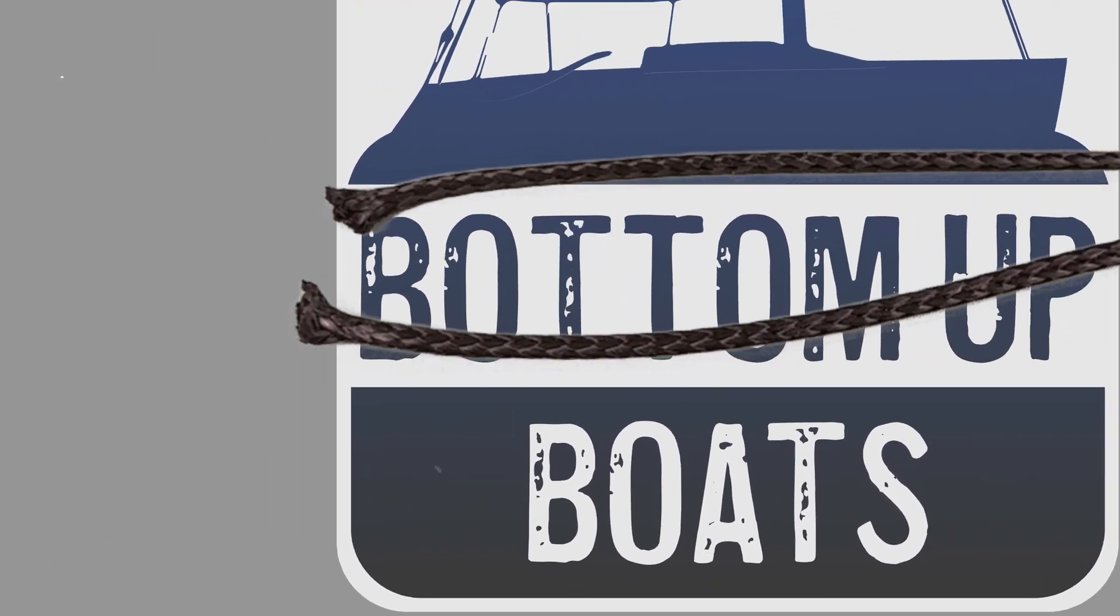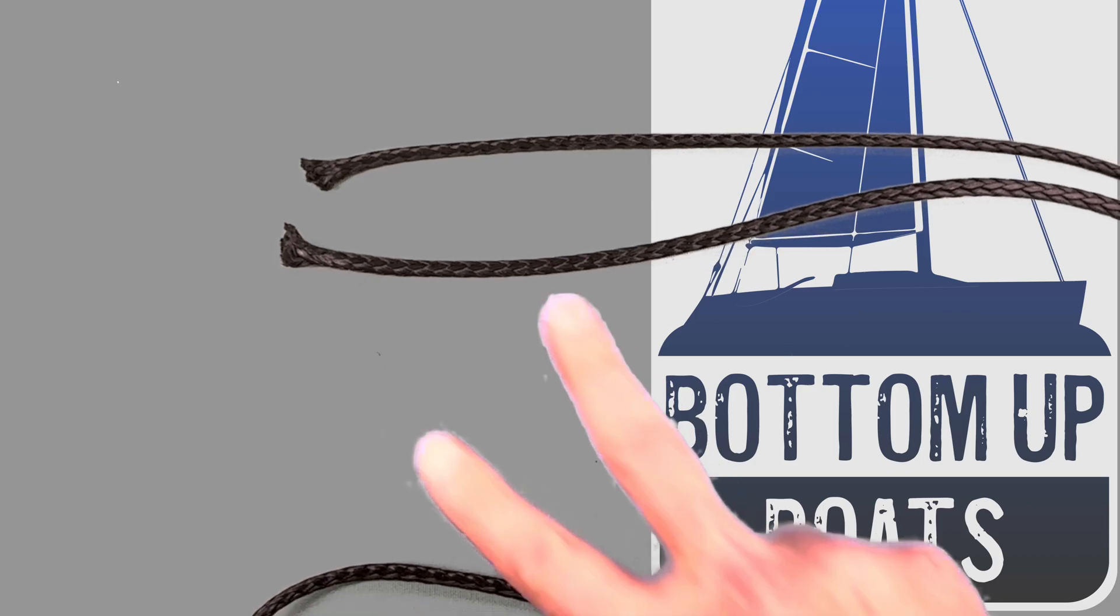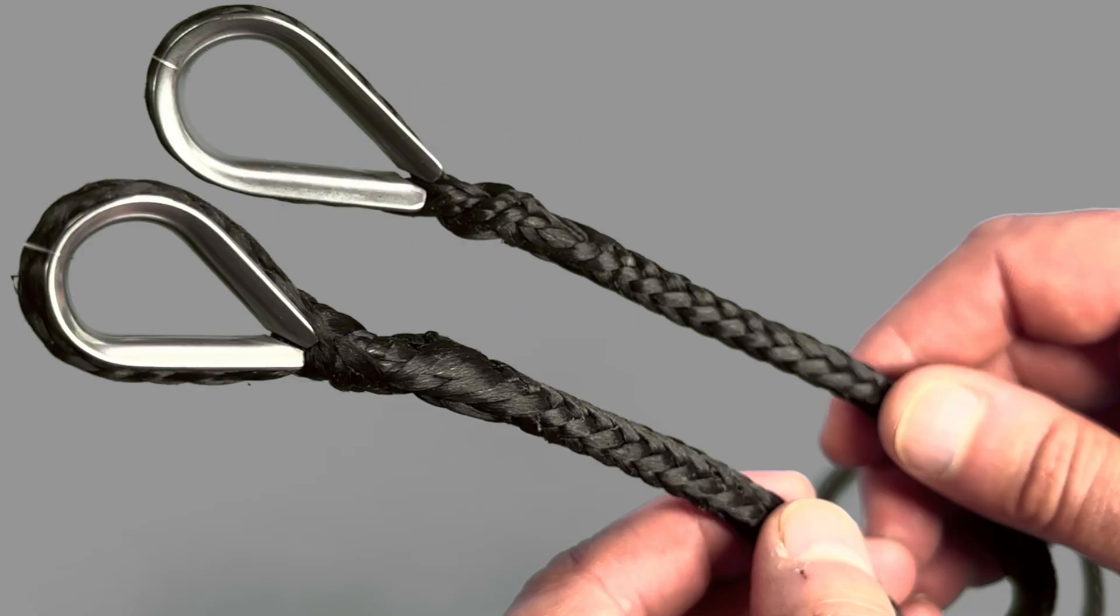G'day and welcome to today's Bottom Up Boats splicing episode where we're going to show you how to put two eye splices, each with a thimble, into a piece of Dyneema.